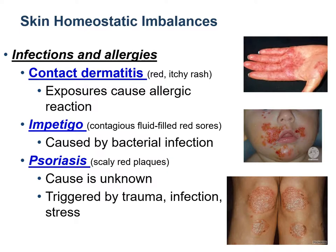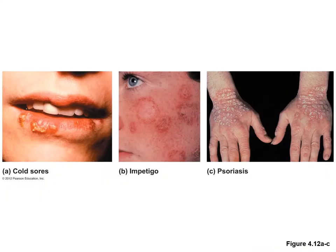Contact dermatitis is a red itchy rash and is usually an allergic reaction. Impetigo is caused by bacterial infection and is a contagious disease. Psoriasis is shown by scaly red plaques, and the cause is unknown but it can be triggered by infection, trauma, or even stress. This figure shows various skin infections.